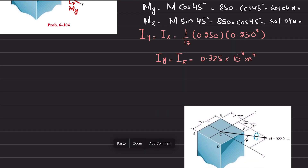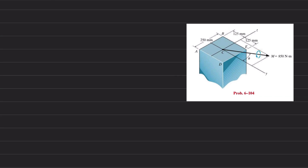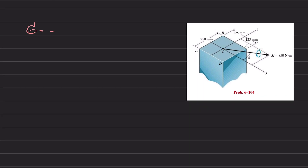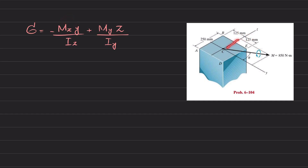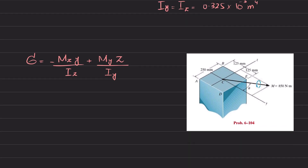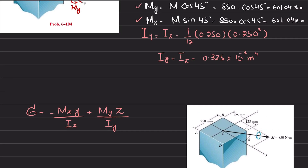The stress at any point can be represented by the formula: σ = −Mz·y / Iz + My·z / Iy. Here Mz is the moment about the z-axis, y is the distance from the z-axis in the y-direction, and Iz is the moment of inertia about z. Similarly My is the moment about the y-axis, z is the distance in the z-direction, and Iy is the moment of inertia about y. We have all these values.